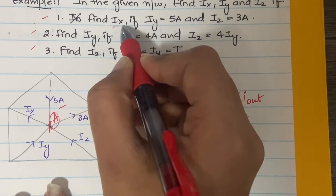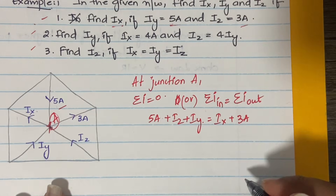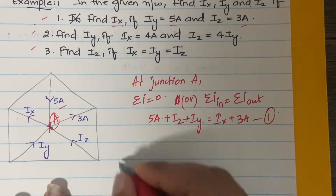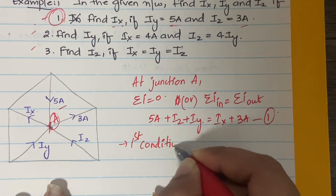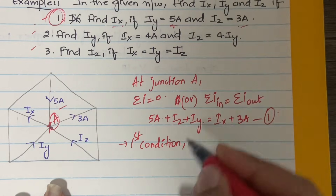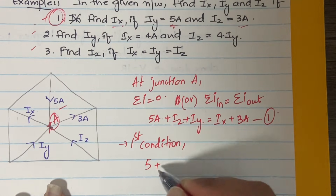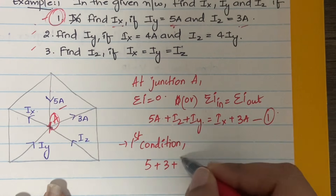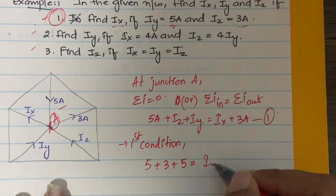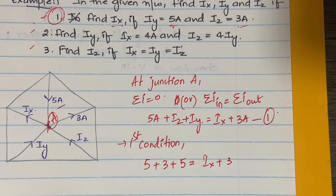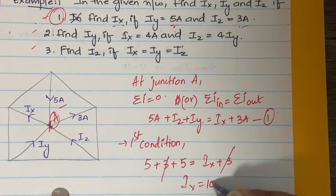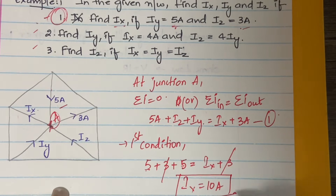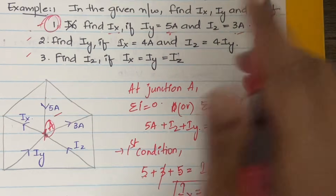The first sub-question: find ix when iy = 5 A and iz = 3 A. Substituting into our main equation: 5 + 3 + 5 = ix + 3. So ix = 13 − 3 = 10 amperes. ix is equal to 10 amperes.